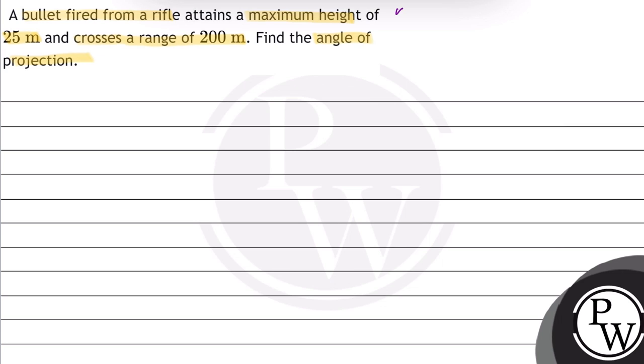In this question, the key concept is projectile motion. In projectile motion, a particle can be used near the Earth's surface with an angle theta and a velocity v.